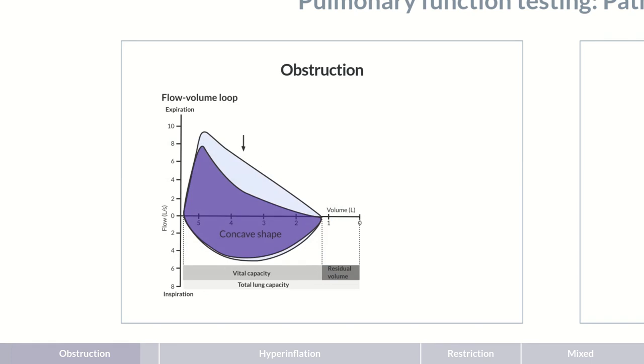With body plethysmography, airway resistance can also be determined. By measuring resistance at basal respiration, the obstruction can be objectified.